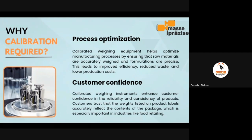The fourth reason is process optimization. Calibration of weighing equipment helps optimize manufacturing processes by ensuring that raw materials are accurately weighed and formulations are precise. This leads to improved efficiency, reduced waste, and lower production costs. The fifth reason is customer confidence. Calibrated weighing instruments enhance customer confidence in the reliability and consistency of products. Customers trust that the weights listed on product labels accurately reflect the content of the packages, which is especially important in industries like food and retail. In summary, we covered five key points: assurance in accuracy, strict compliance to standard requirements, quality control, process optimization, and customer confidence.